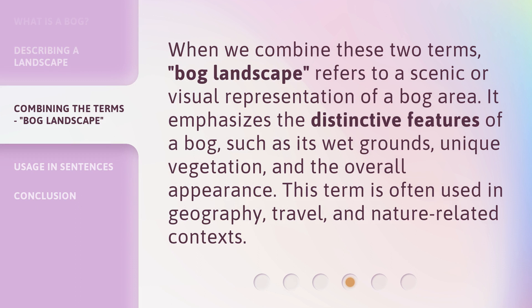When we combine these two terms, 'bog landscape' refers to a scenic or visual representation of a bog area. It emphasizes the distinctive features of a bog, such as its wet grounds, unique vegetation, and the overall appearance. This term is often used in geography, travel, and nature-related contexts.